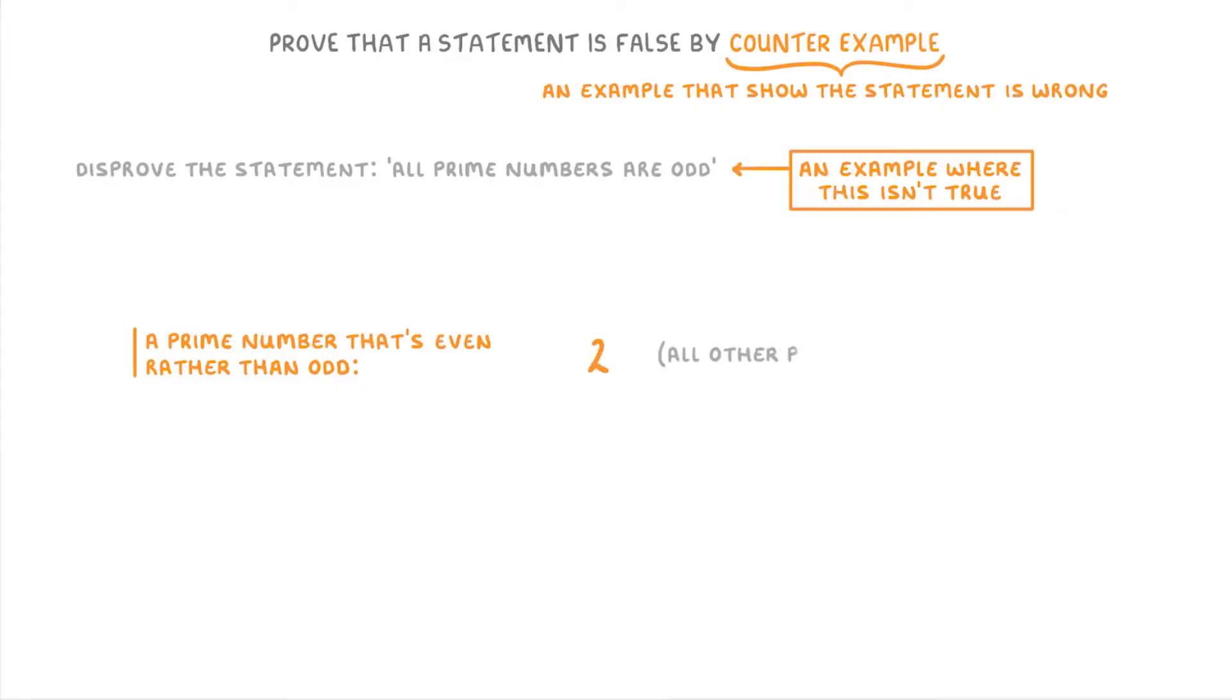Like if you think of them in a list, 2, 3, 5, 7, 11, and so on, they're all odd apart from 2. So in your exam, you'll just write something like, this statement is false because 2 is a prime number and it's even not odd.